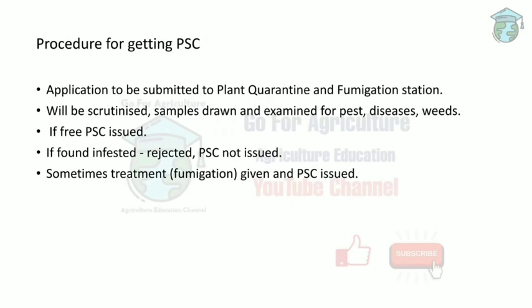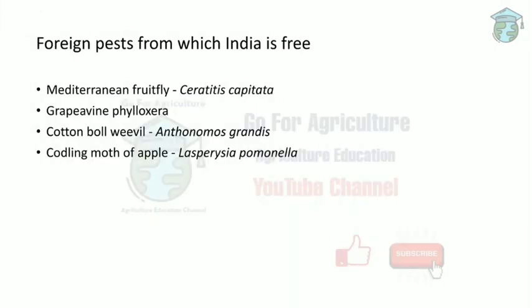The procedure for getting a phytosanitary certificate: first, you submit the seed to a plant quarantine and fumigation station, which examines the seed for any pests, diseases, or weeds. If any are found, the phytosanitary certificate will not be issued. Instead, the infested or infected seeds will be fumigated, and only after fumigation will the phytosanitary certificate be issued.